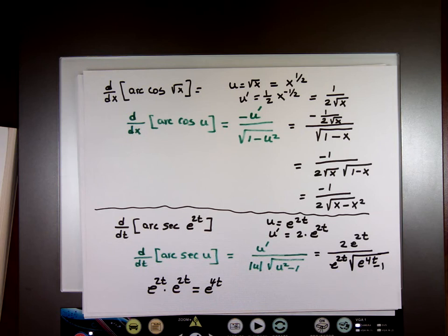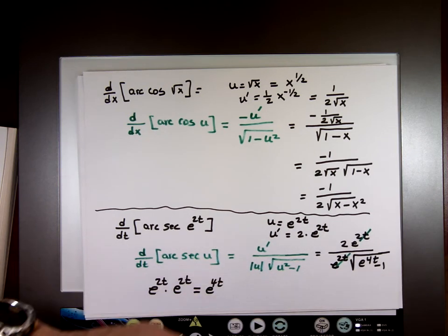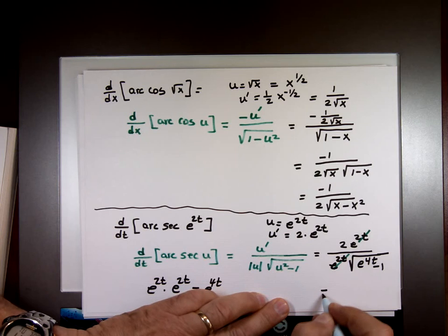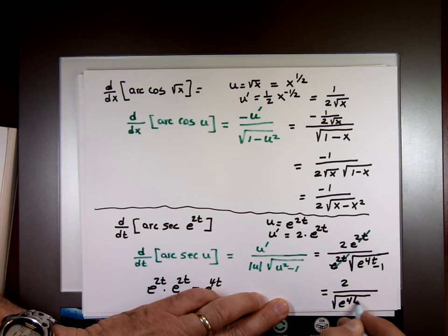And the only thing I can do at this point is simplify this, because these two will cancel each other out. And my final answer is going to be 2 divided by the square root of e to the 4t, minus 1.